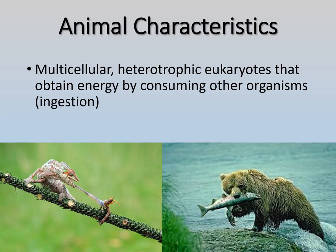Let's go through common animal characteristics — what do they all share? They're all multicellular, heterotrophic (meaning they need to consume their energy — they can't make their own like autotrophs), and they're all eukaryotes. What makes animals different from fungi, which are also multicellular heterotrophic eukaryotes? Fungi consume energy by absorption — they break down energy around them and absorb it — whereas animals must consume energy by ingesting other organisms.